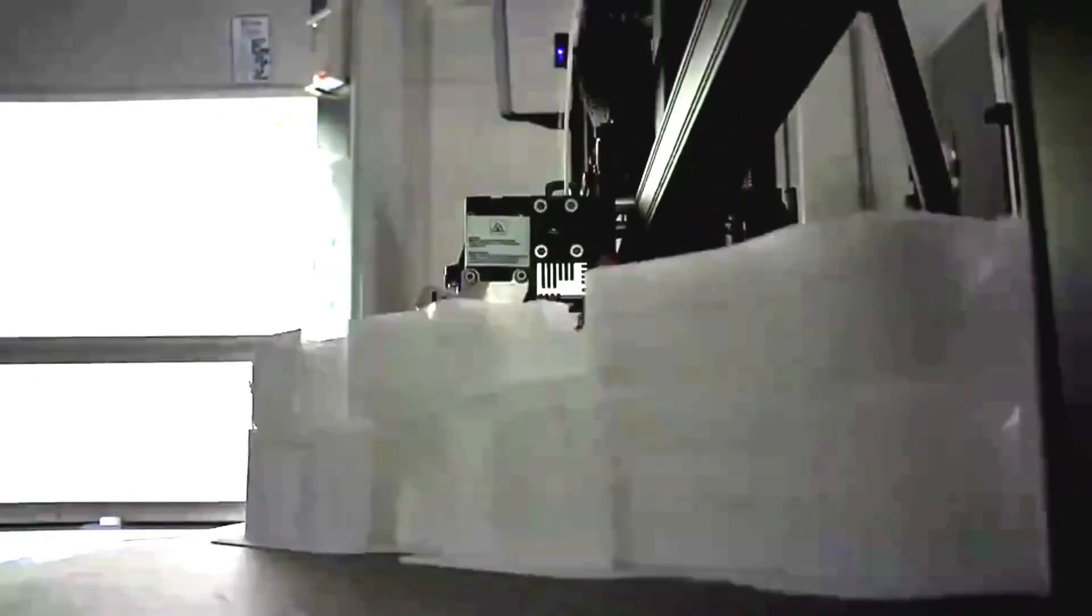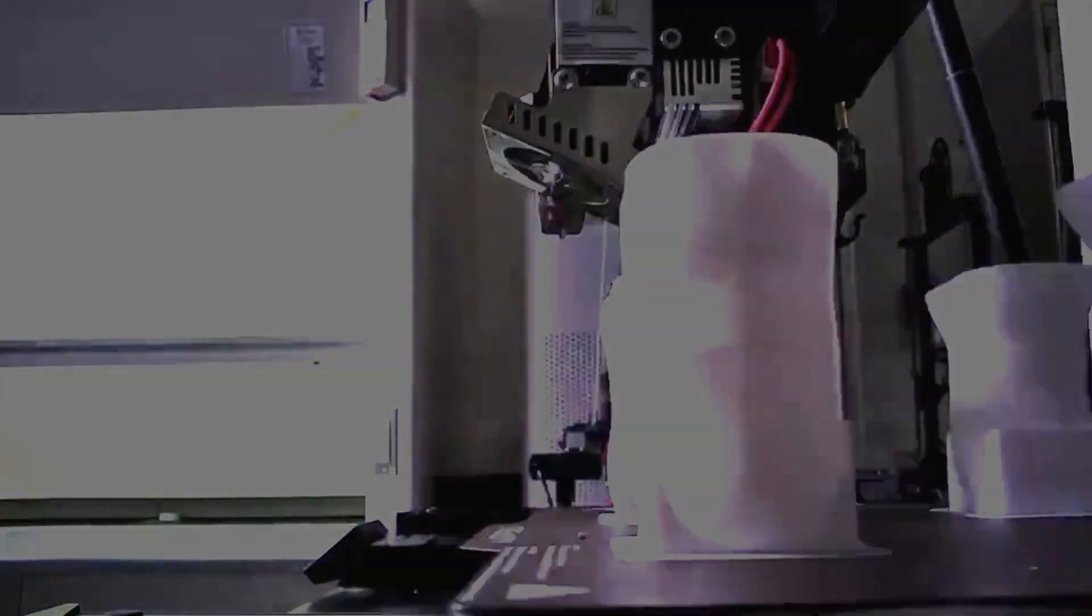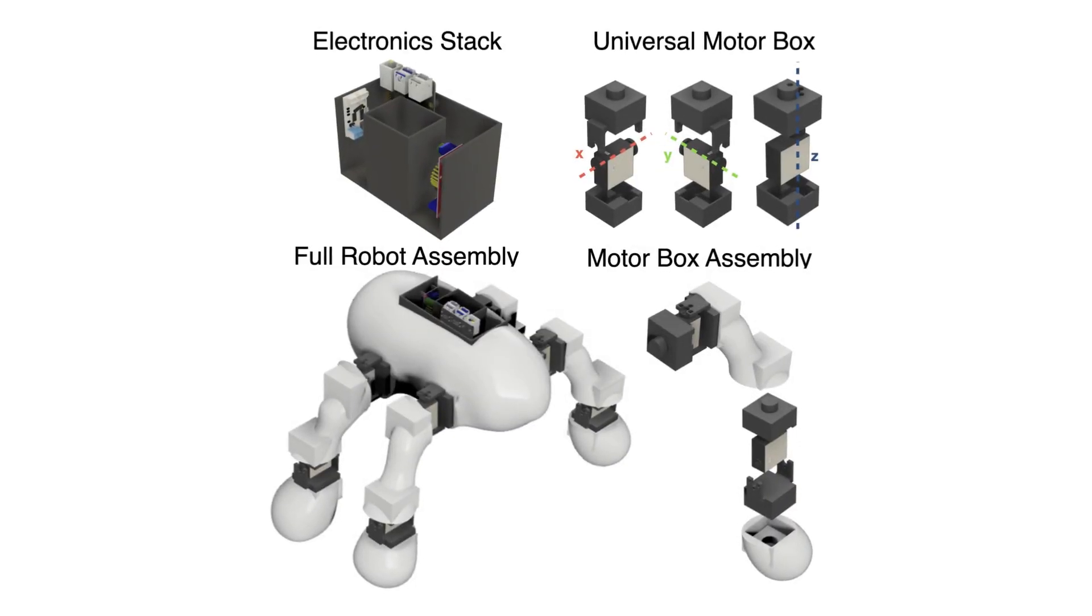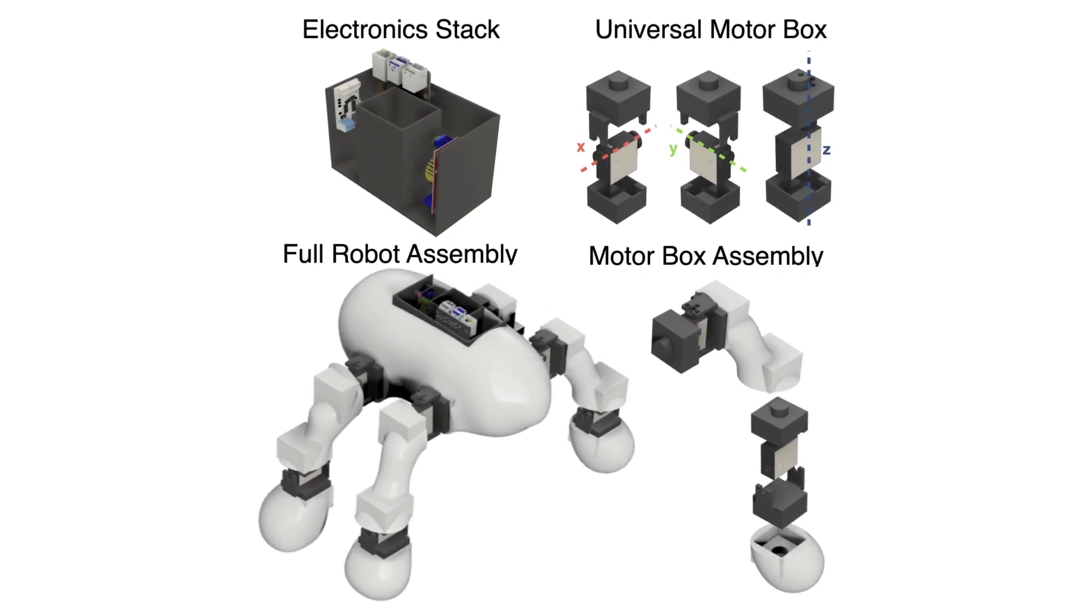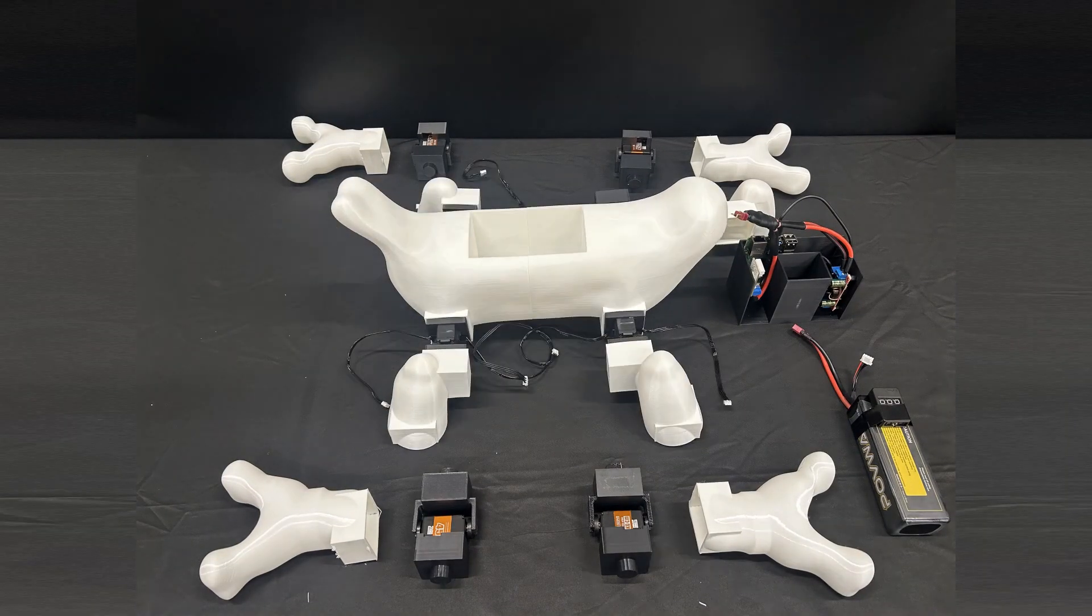The robot can be quickly assembled after 3D printing. Pre-built motor and electronics modules enable tool-free assembly by snapping the components together. This process takes just a few minutes and the robot becomes functional immediately, achieving highly accurate sim-to-real transfer.